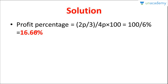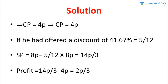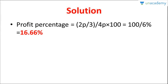Profit percent is always calculated on cost price — cost price is the base value. So profit% = (profit ÷ cost price) × 100 = (2P/3 ÷ 4P) × 100 = 100/6% = 16.66%. The answer is Option A: 16.66% profit.